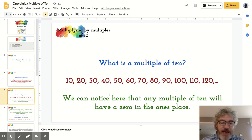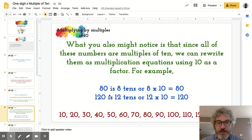We can notice here that any multiple of 10 will have a zero in the ones place. What you also might notice is that since all the numbers are multiples of 10, we can rewrite them as a multiplication equation using 10 as a factor.